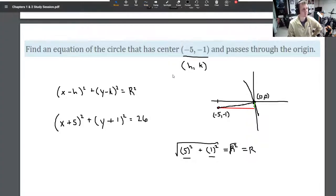Next problem, unless you've got a question on this. Wait, so the equation is x plus 5 squared plus y plus 1 squared equals 26? Right.